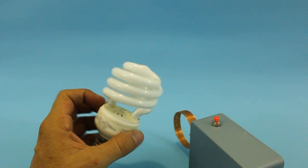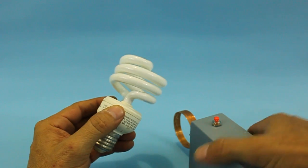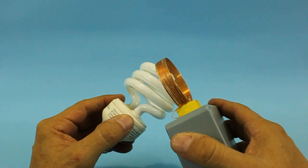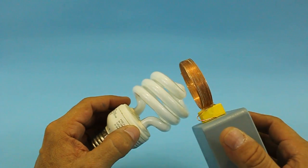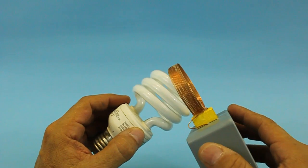Let's try first with this fluorescent lamp. We can see how the electromagnetic field makes the lamp glow.